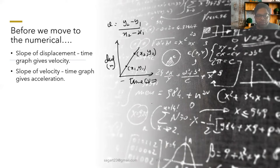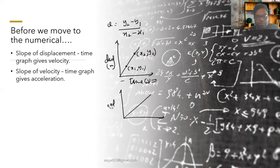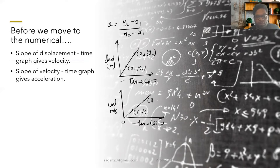For a velocity-time graph, the slope gives you acceleration. The y-axis is velocity in meters per second and the x-axis is time. Taking two points (x1, y1) and (x2, y2), acceleration equals (y2 − y1) / (x2 − x1). The horizontal axis is the x-axis and the vertical axis is the y-axis.